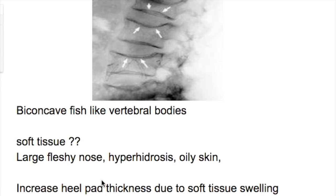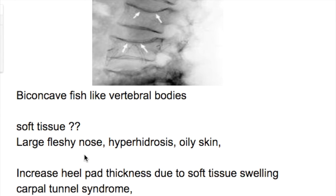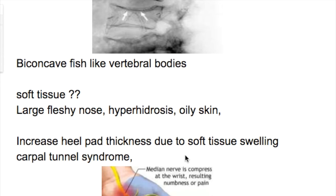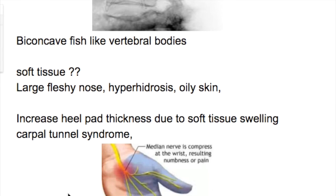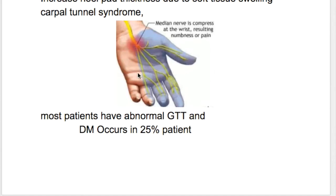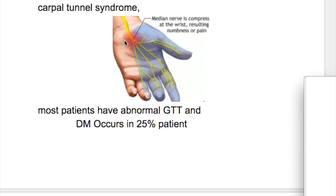What are the effects on soft tissues? There is a large fleshy nose, hyperhidrosis, and oily skin. There is increased heel pad thickness due to soft tissue swelling, and there is carpal tunnel syndrome — due to entrapment of the median nerve at the wrist joint under the flexor retinaculum. The median nerve supplies the lateral three and a half fingers including the thumb, so patients get pain and numbness in these fingers. The medial one and a half fingers are supplied by the ulnar nerve.